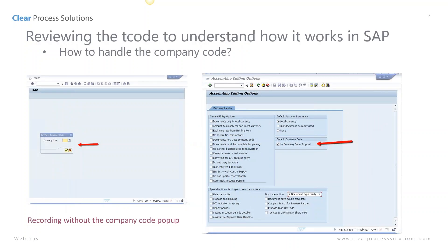For this particular T code, FB50, one of the things I found is that if you're going to be doing multiple company codes, you need to think about how you're going to handle the script. Most of the time when you go into FB50, nothing is mentioned about the company code at the start — it just goes right into the screen and you end up having to change it once you get into the transaction.